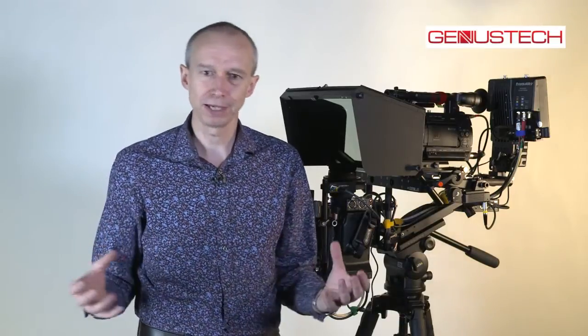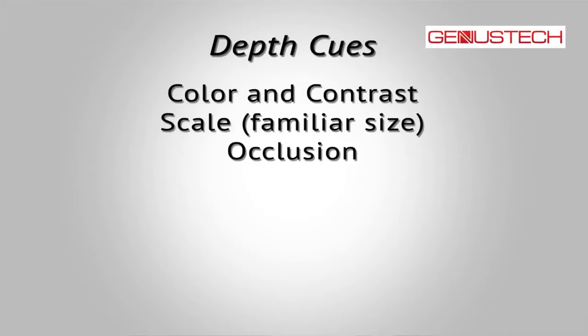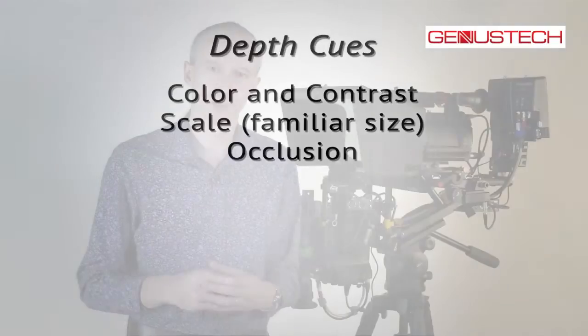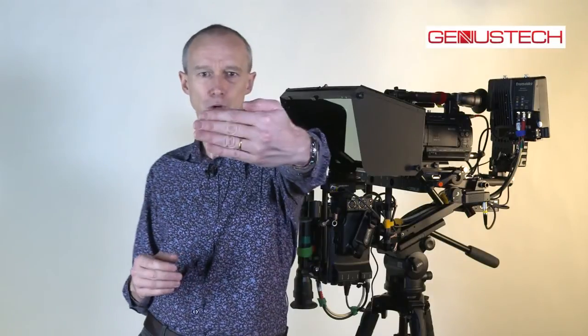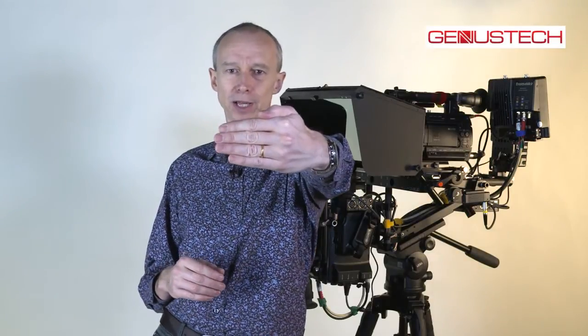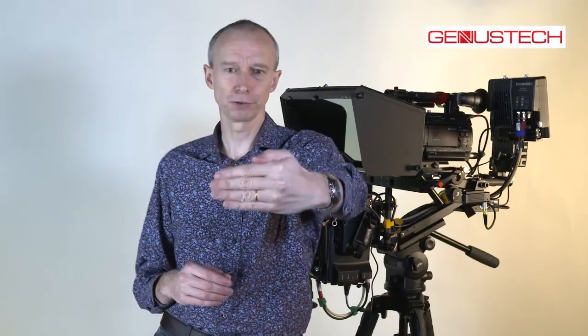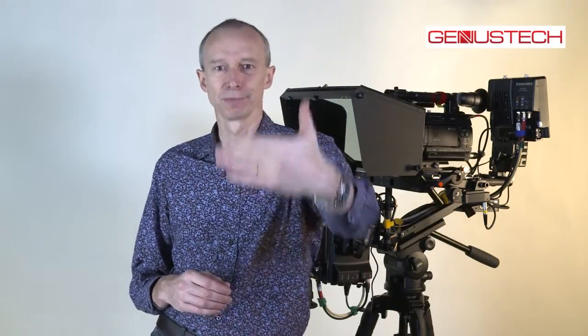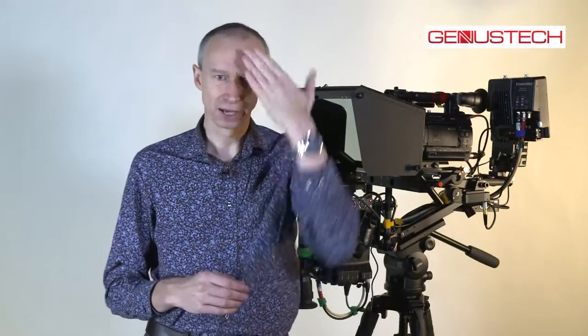And when it's very big, we know that it must be very close. Other clues that we use are occlusion. Occlusion is where one object passes in front of another. So if I hold my hand up in front of the camera now, it's occluding me — it's blocking your view of me. So you know that my hand must be closer to the camera than my face. That's occlusion, and we use this all the time.